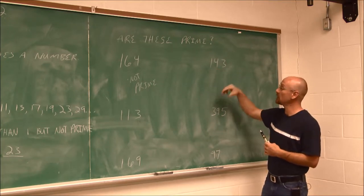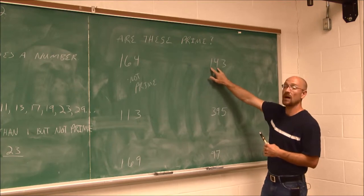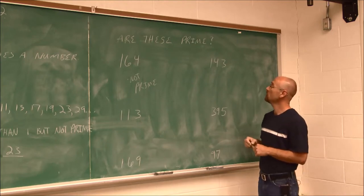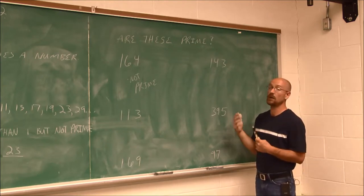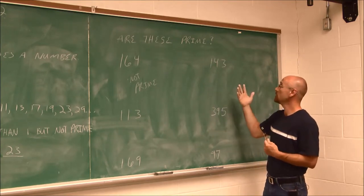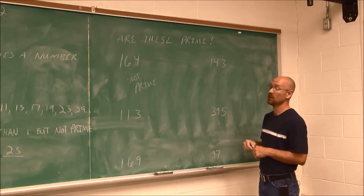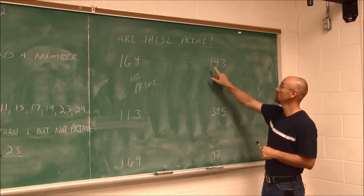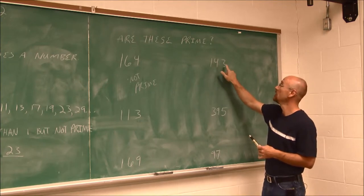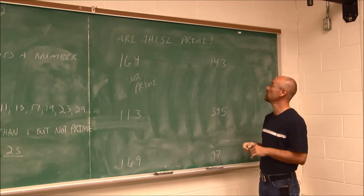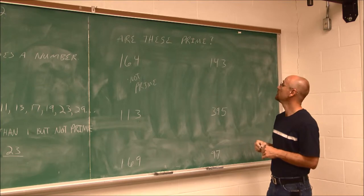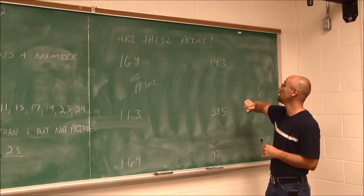What about 3? Well, if we test that divisibility, 1 plus 4 is 5, plus 3 is 8. 8 is not divisible by 3. This number is not divisible by 3. What if we tested 5? Well, it doesn't end in 0 or 5, so maybe we want to try 7. Well, 7's divisibility rule is a little bit more complex. It's actually easier to try it if I just do the division. 7 goes into 14 twice with no remainder. 7 does not go into 3. So this is not divisible by 7. It wasn't divisible by 3, so it's not divisible by 9.